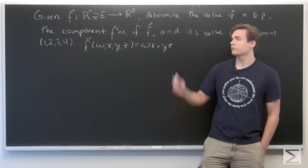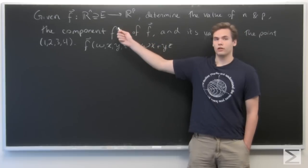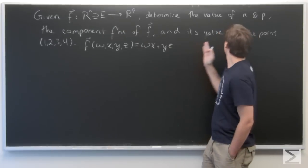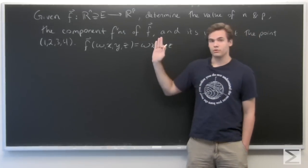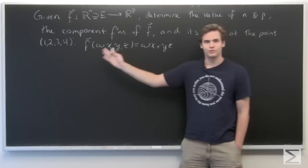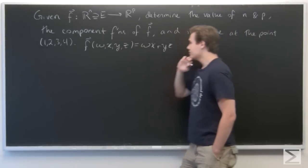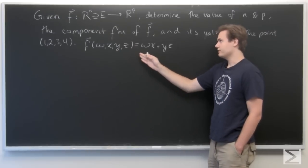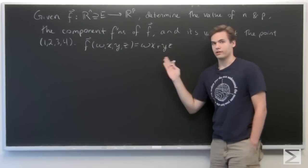In this problem, we're given a function from some subset E of Rⁿ to Rᵖ, and we want to determine the value of n and p. We want to determine the component functions of f and its value at the point (1, 2, 3, 4). Here, f is given by f(w,x,y,z) = wx + yz.